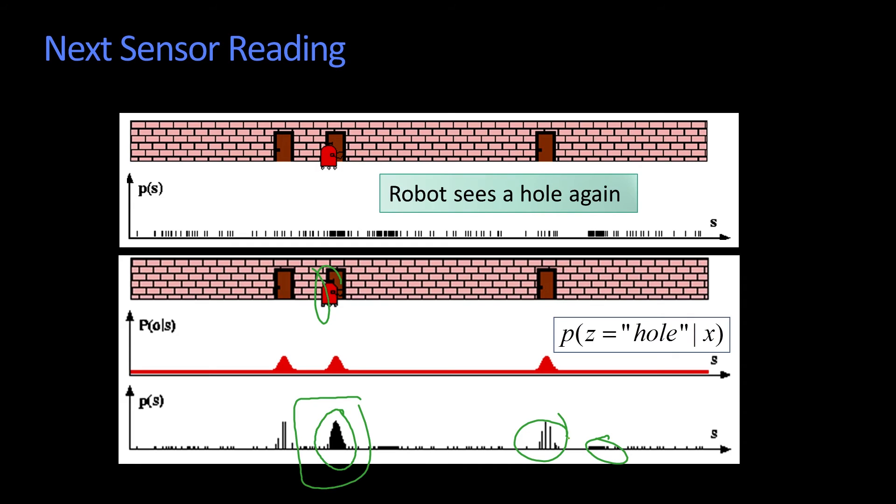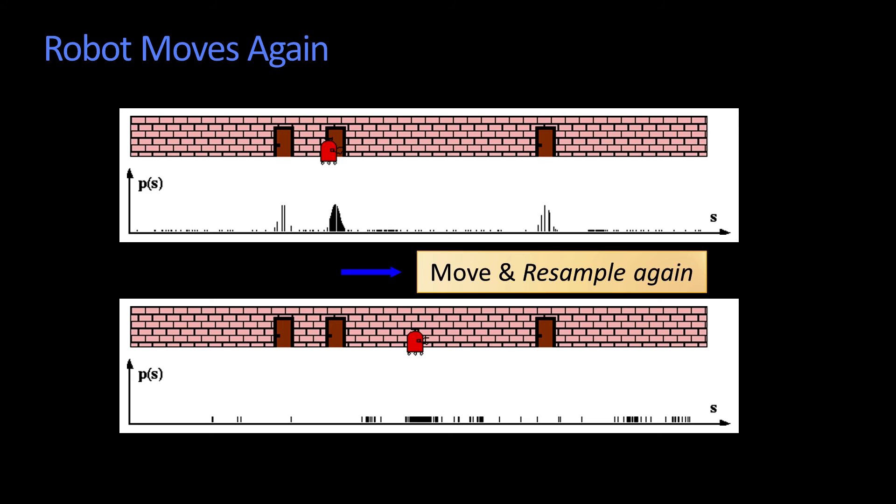Anyway, the idea is that it's weighting these different probabilities, okay? And you could do it again,